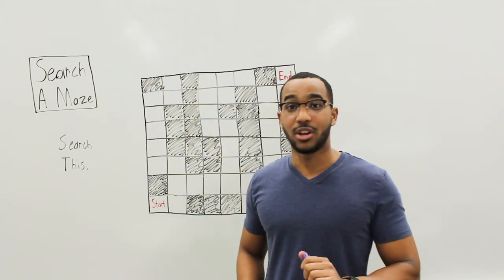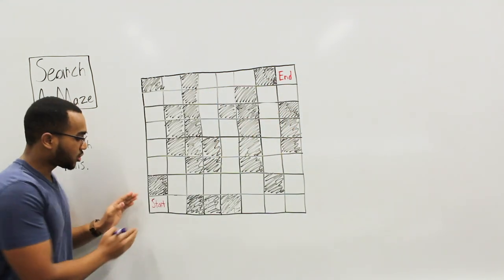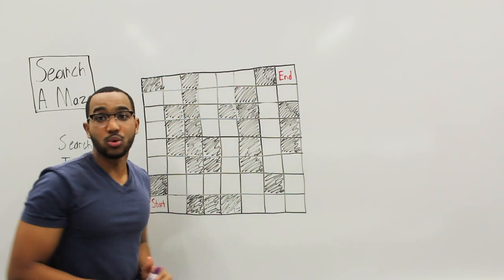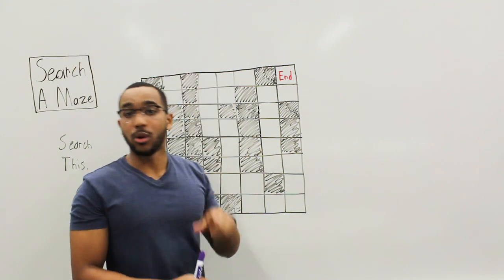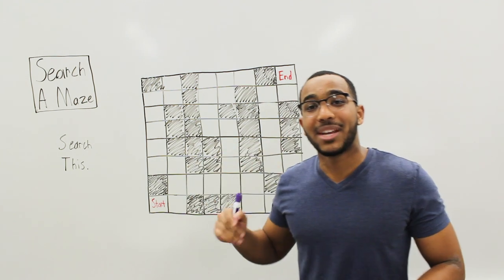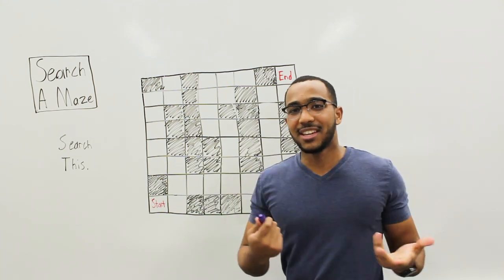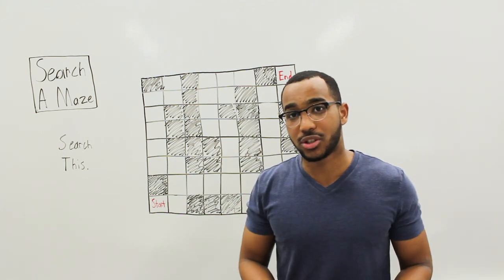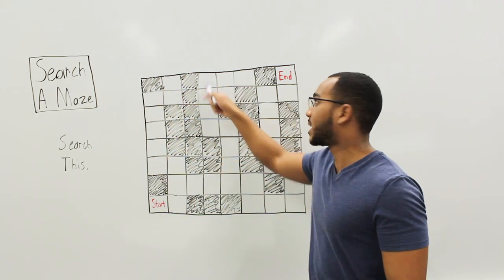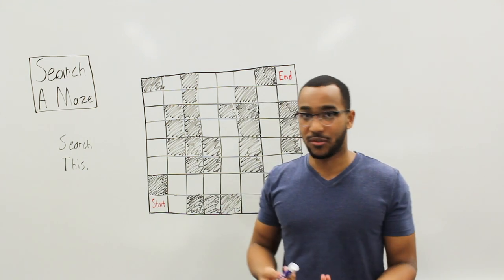If we use breadth-first search, we'll always get the shortest path from start to end. BFS starts and goes outwards layer by layer from the start, so when we hit the end, we'll be at the layer the end falls in — that's why it gives the shortest path. If we use depth-first search, it's going to take us all the way in deep. It might not give us the shortest path, but it will give us a path.